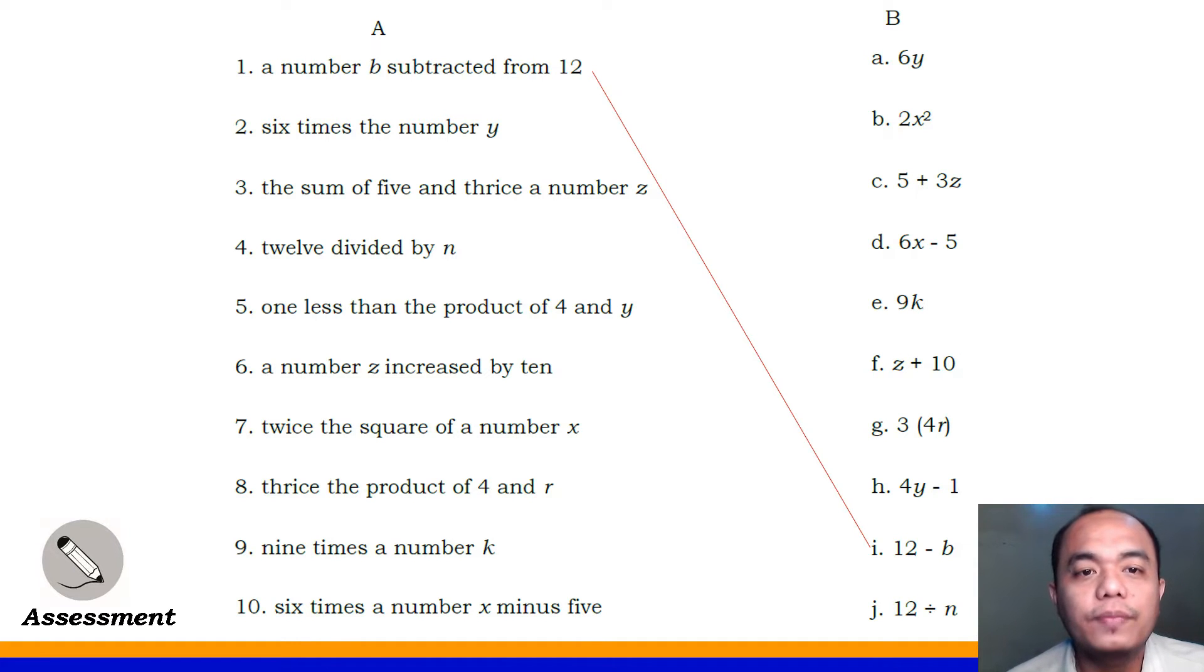Next, number 2, six times the number Y. Very good! It's letter A, 6Y. Number 3, the sum of 5 and thrice a number Z. Very good! It's letter C, 5 plus 3Z. Number 4, 12 divided by N. What's your answer? Very good! It's letter J, 12 divided by N.